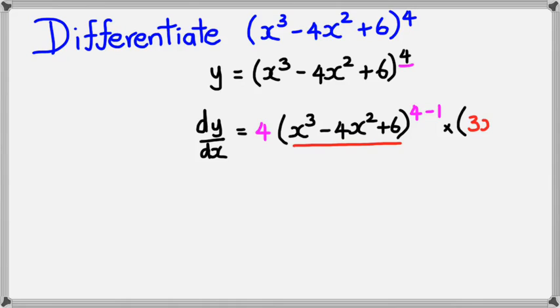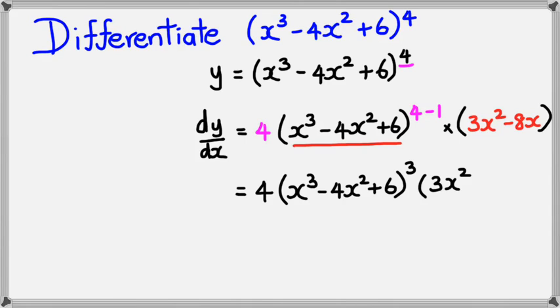So x³ will differentiate to 3x². Minus 4x² will differentiate to minus 8x. And 6, of course, will differentiate to 0. So I'm done. The final answer would simply be 4 times x³ minus 4x² plus 6 to the power of 3, multiplied by 3x² minus 8x. And that, ladies and gentlemen, is how you differentiate using the chain rule. Thank you for watching.